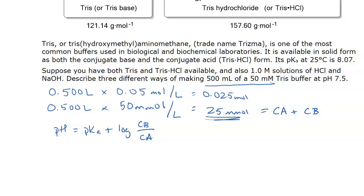And that will allow me to solve for the ratio of conjugate base to conjugate acid. So let's do that. So the pH that's desired is 7.5. The pKa at 25 degrees C, where we're assuming we're going to do this, is 8.07. Now if you're not at 25 degrees Celsius, there is a correction factor for the pKa. I'm not going to go into that here.